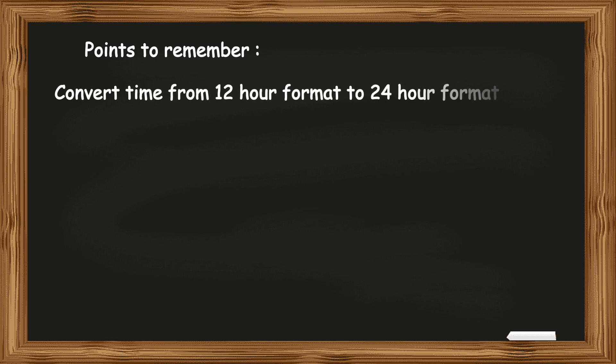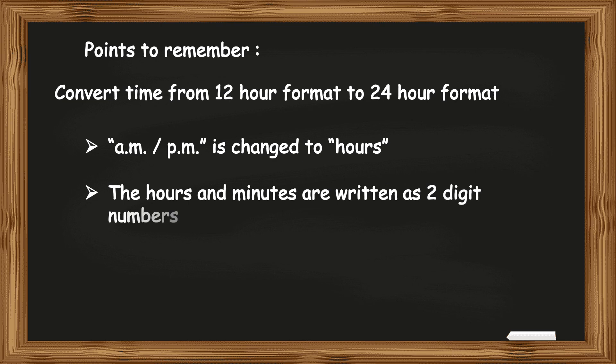Before we end, let's quickly recall some important points to remember while converting time from the 12-hour format to the 24-hour format. AM and PM is changed to hours in the 24-hour format. The hours and minutes are written as two-digit numbers and the minutes remain unchanged in both the formats.